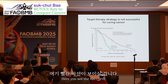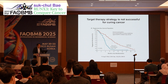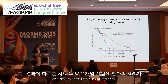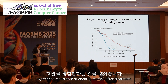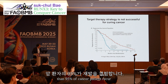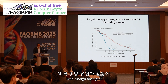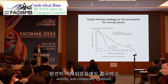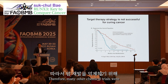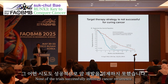Here you can see that the red curve indicates when cancer recurs. The results show that 50% of patients recur at about 11 months after treatment, and at about 24 months, 95% of patients recur. What does this mean? Even though the oncogene activity was completely inhibited, the cancer was not cured. Therefore many other chemicals were challenged to inhibit cancer recurrence, but none of the trials were successful.